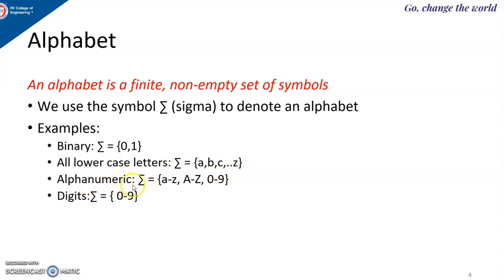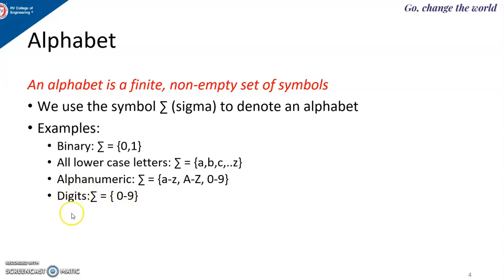Alphanumeric: sigma will be a to z, both capital as well as small a to z, and 0 to 9. Suppose my alphabet is containing only digits, then sigma will be 0 to 9.